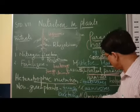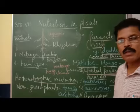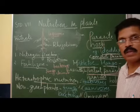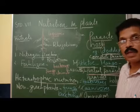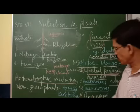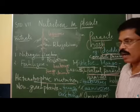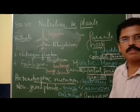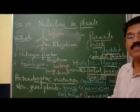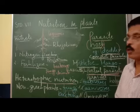Now, omnivores — human beings, crow, dog, and bear — are all omnivores. Human beings are both herbivores and carnivores. We get food directly from plants as well as we get flesh from other animals. Hence, we are called omnivores.